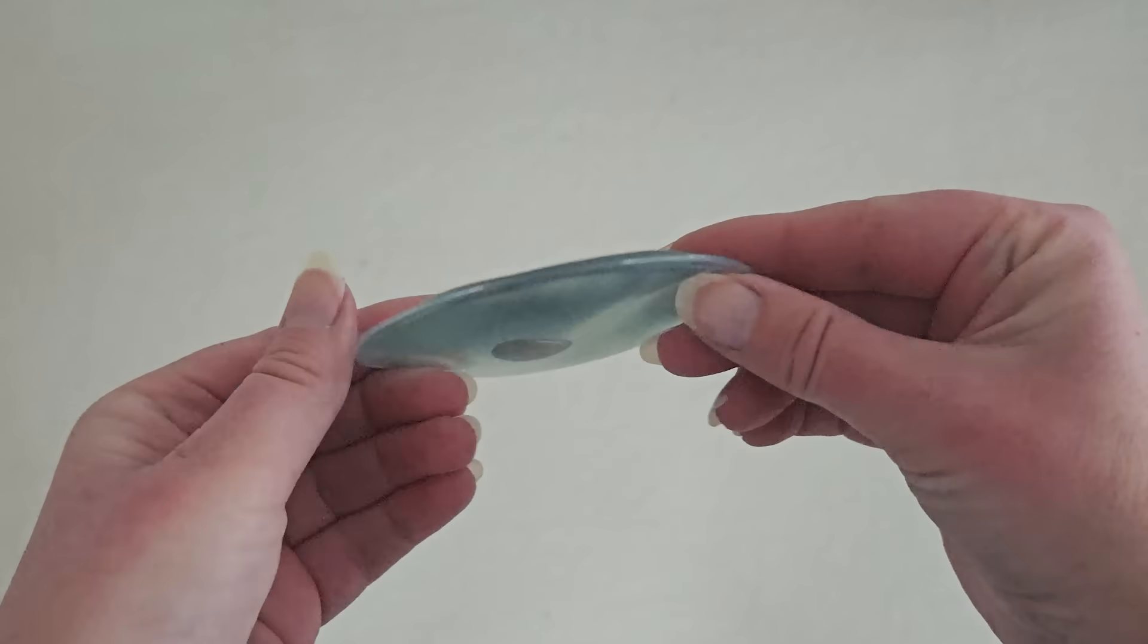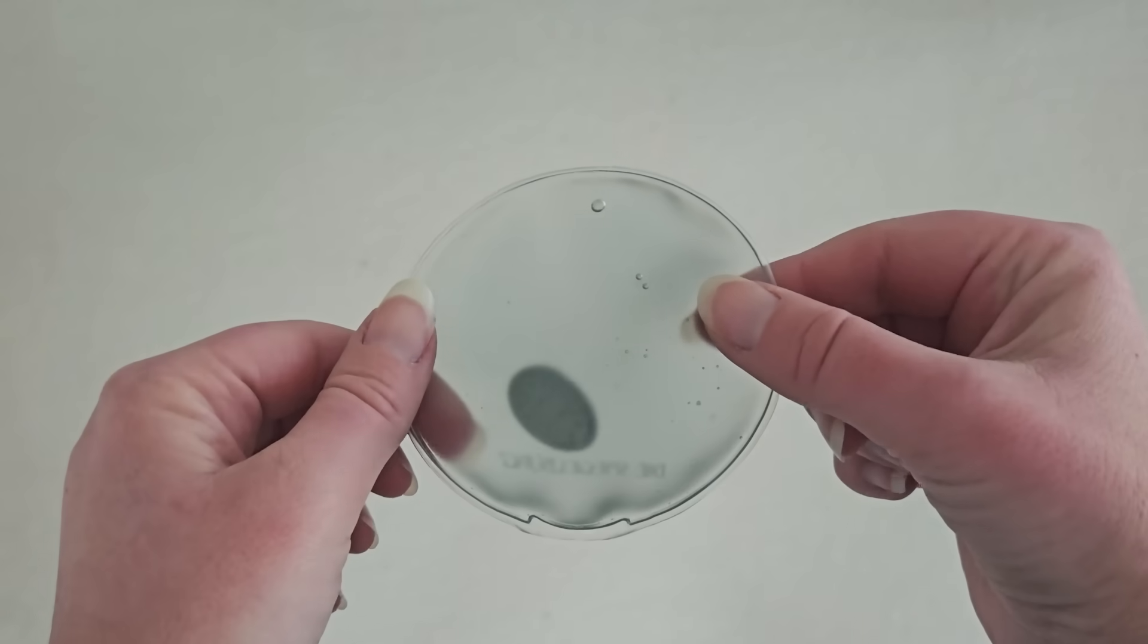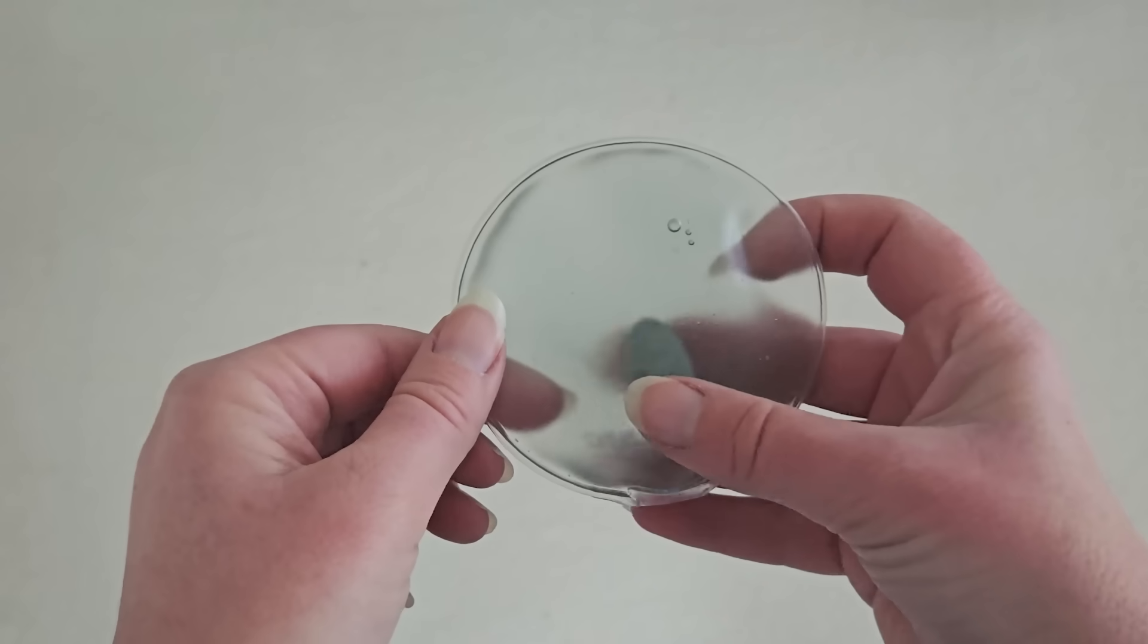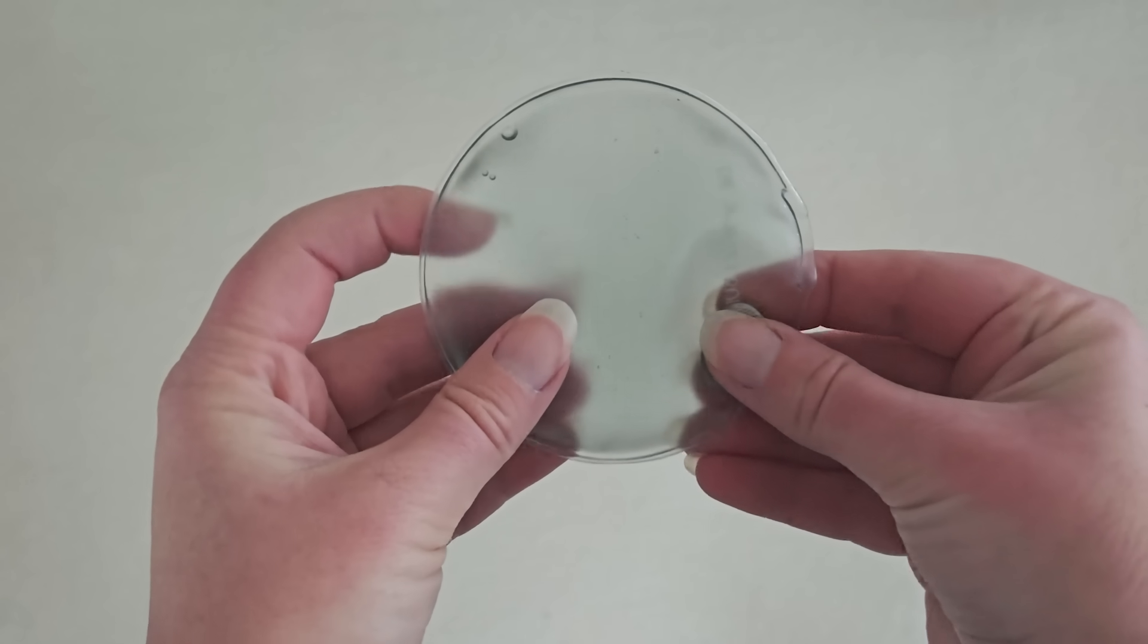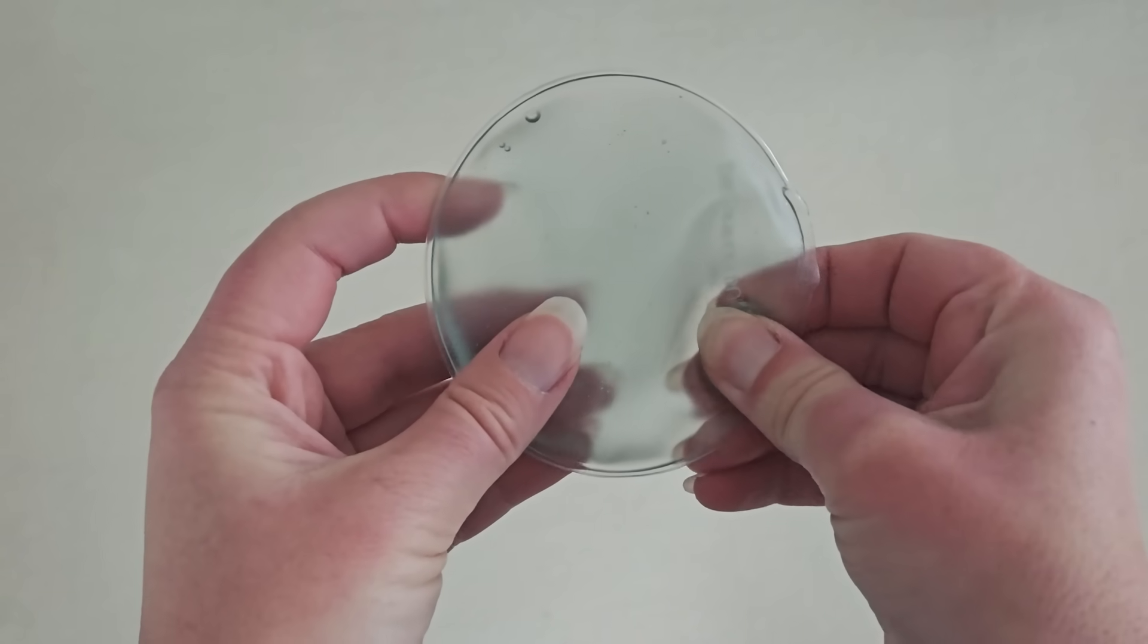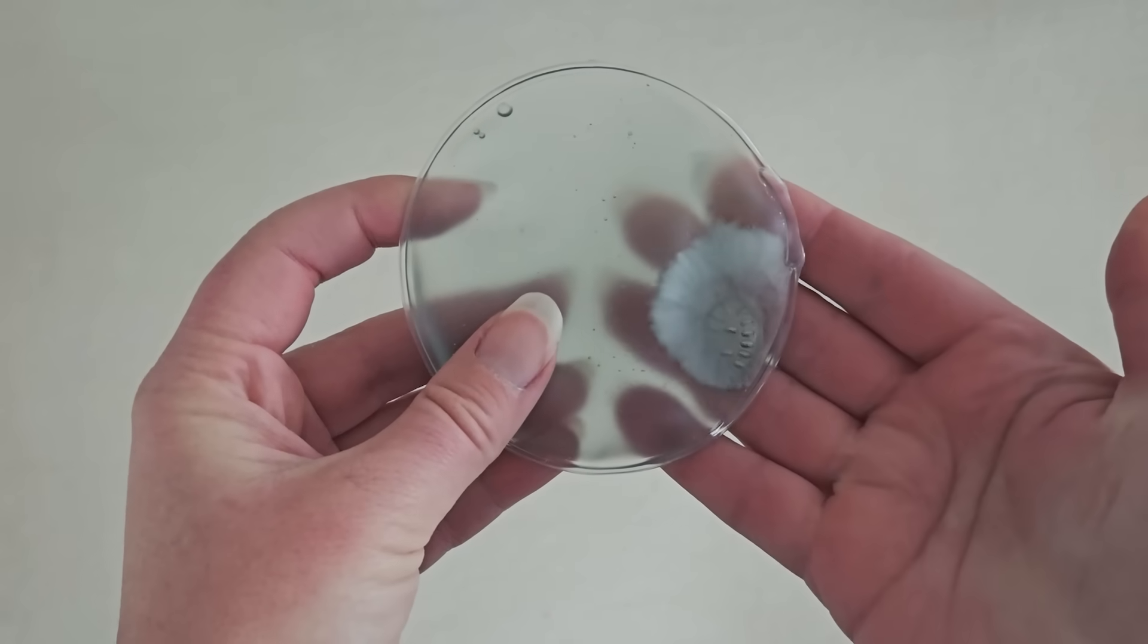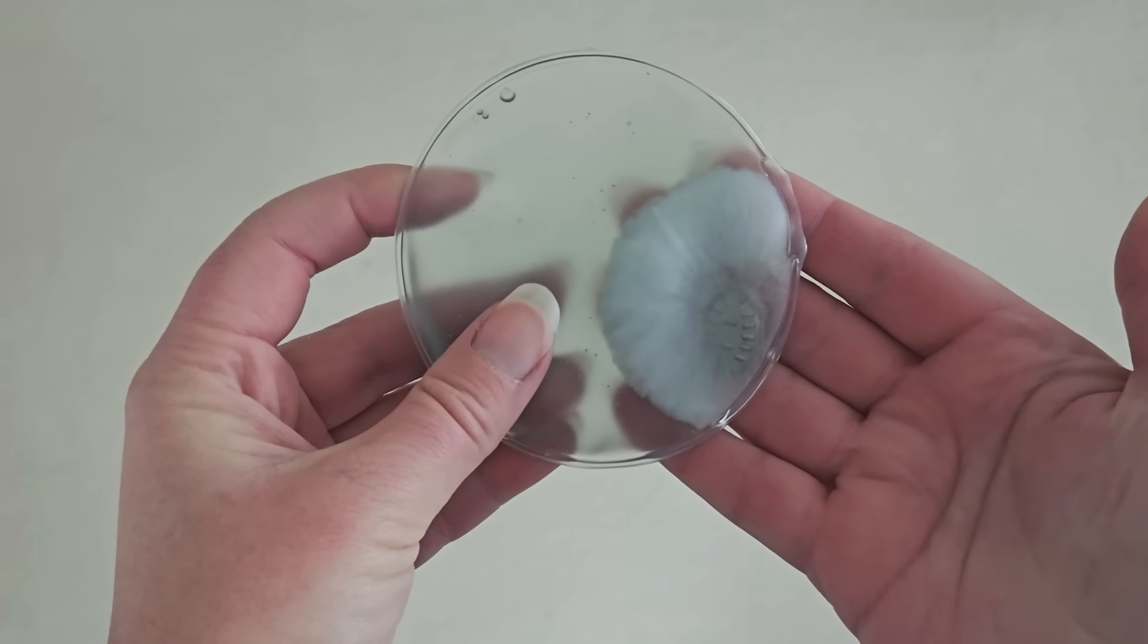Such a supercooled liquid contains energy that it wants to release by switching into another, more stable solid state. You can trigger this transition by a large enough perturbation, for example pressure or a small electric spark, by twisting this metal plate.